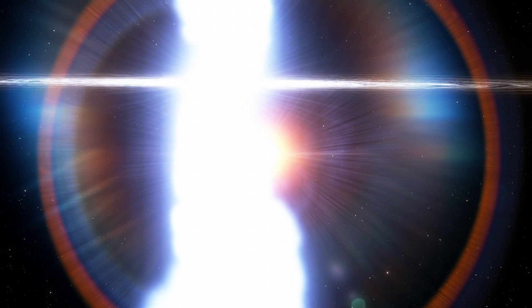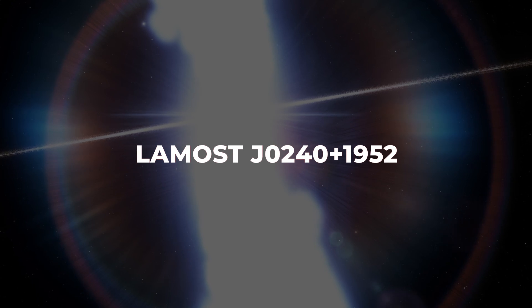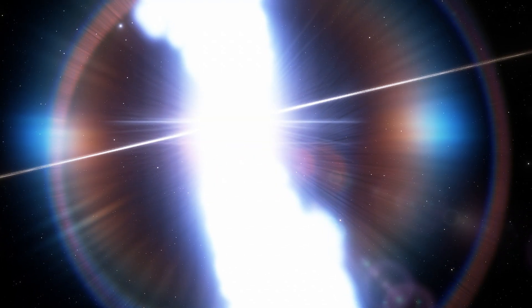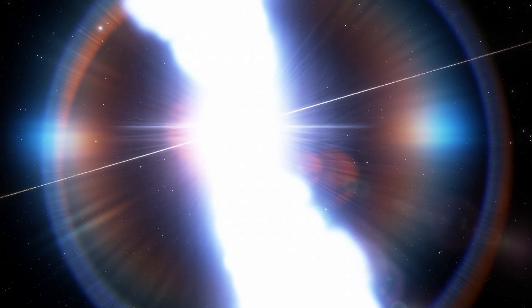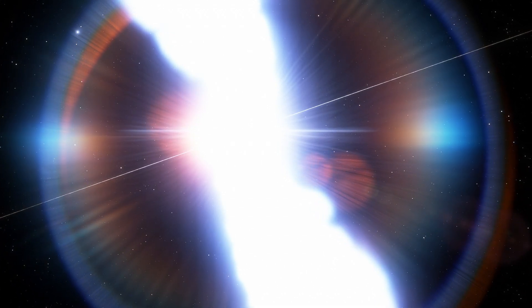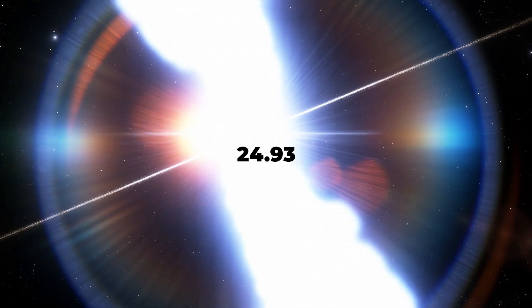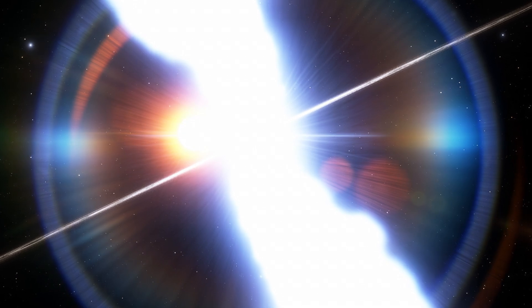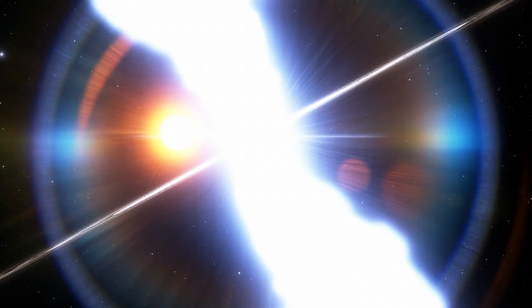The group managed to detect a periodic blip of light from LAMOST J0240 plus 1952, currently the fastest spinning white dwarf. They also noted that this blip was repeated every 24.93 seconds, a record never seen before.